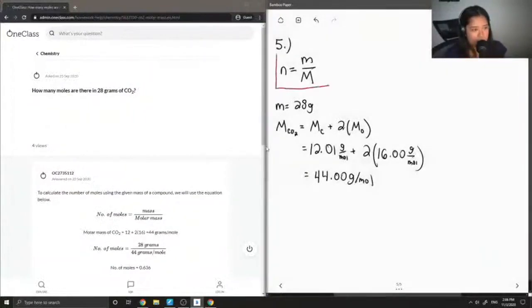So the question is asking how many moles there are. Let's use this equation. We have 28 grams divided by 44.00 grams per mole, and you end up with 0.636 moles of CO2.